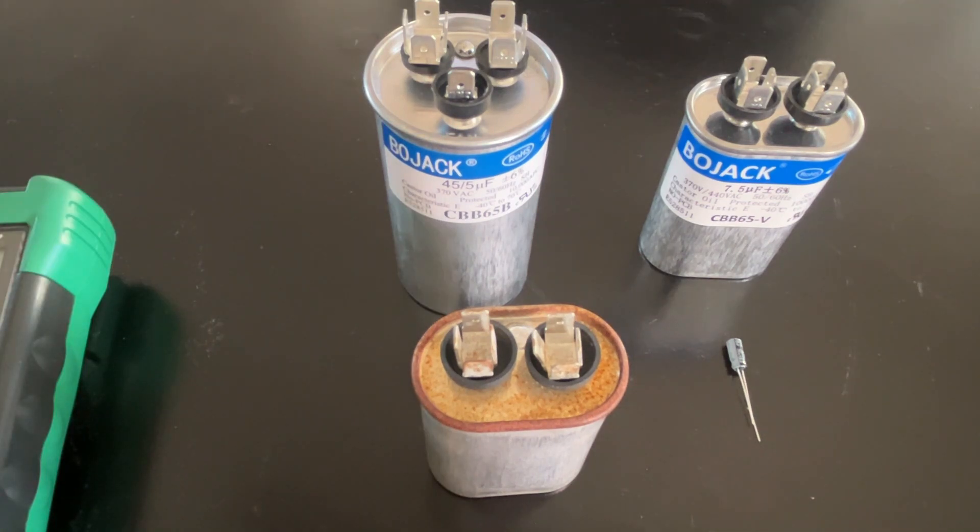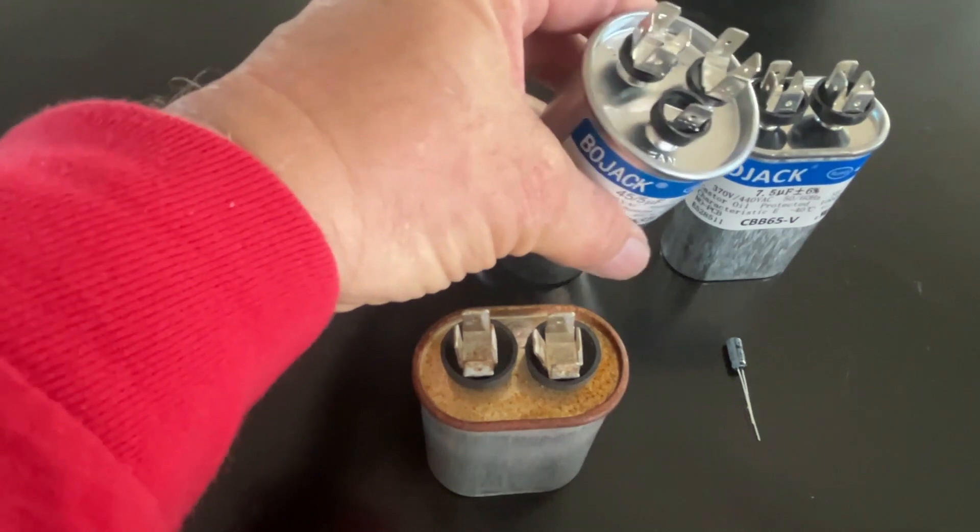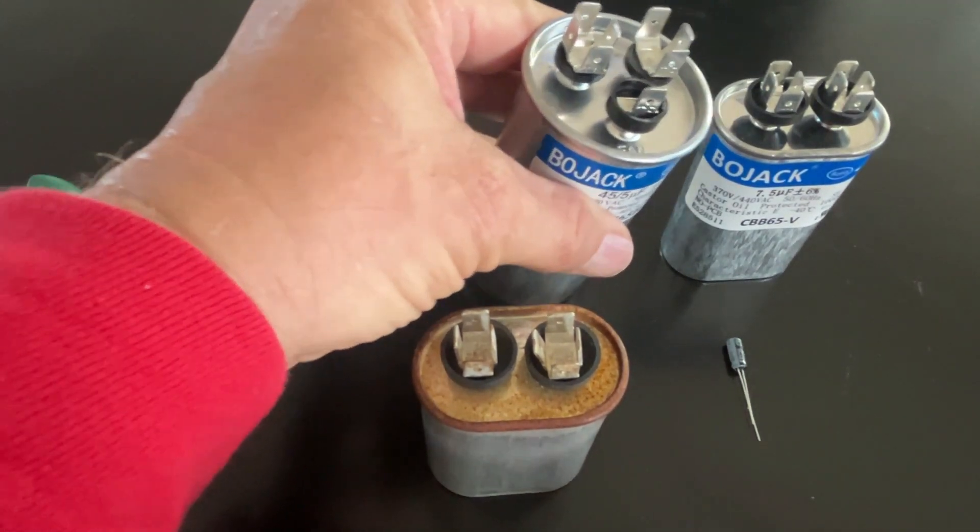The first thing you want to do before measuring the capacitance of a capacitor is discharge it. That's assuming you just took it off the motor or air conditioner it was installed on. To discharge a capacitor, you take a screwdriver or something metal or a piece of wire.